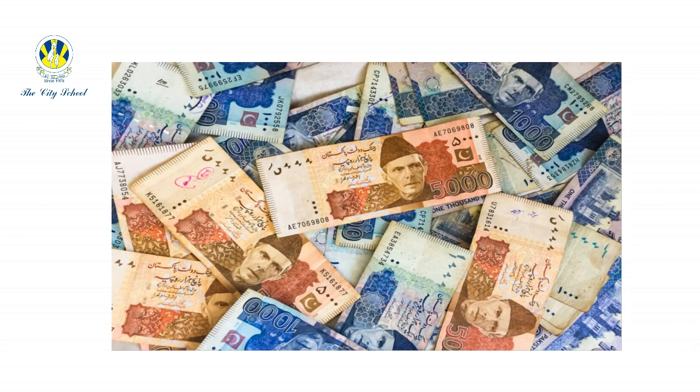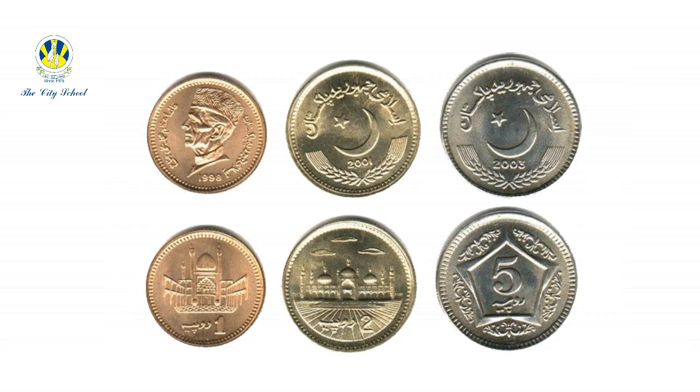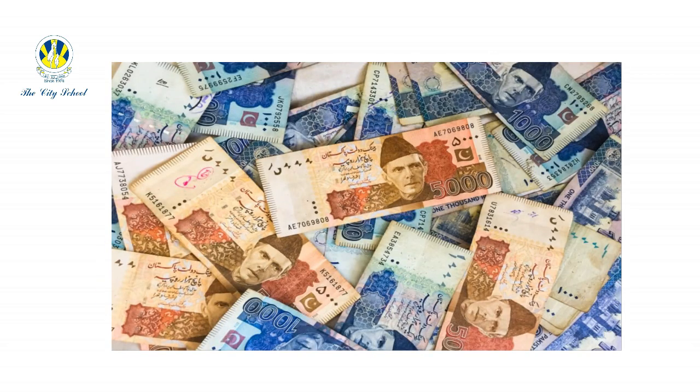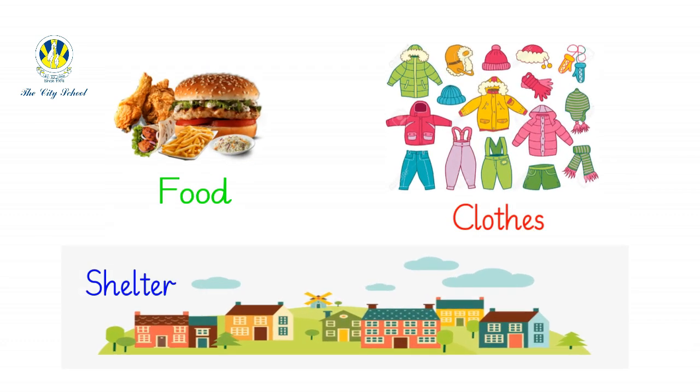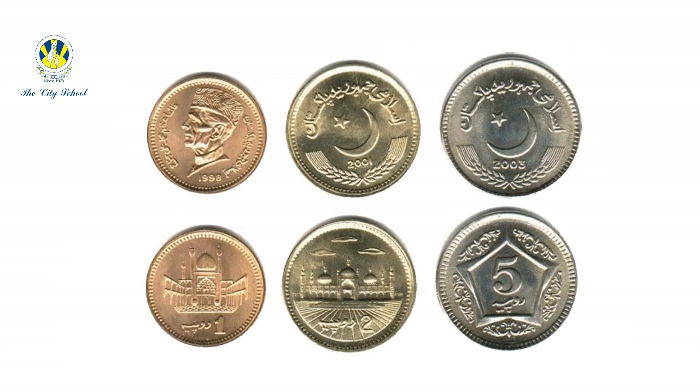Hello kindergarteners, hope and pray that you're all doing great today. We're going to learn about a very interesting topic: money. During this video lesson we're going to develop recognition about local currency, that is coins and notes. People use money to buy things like food, clothes, and shelter. People buy things with coins or rupees.